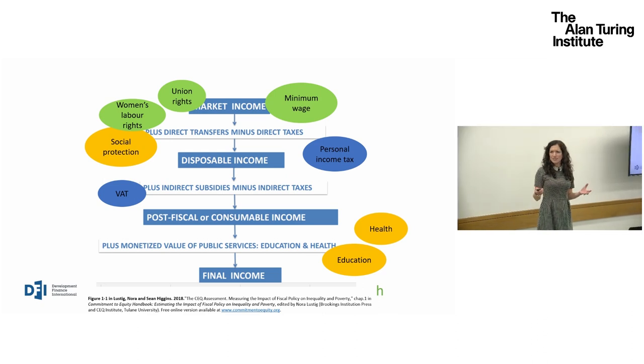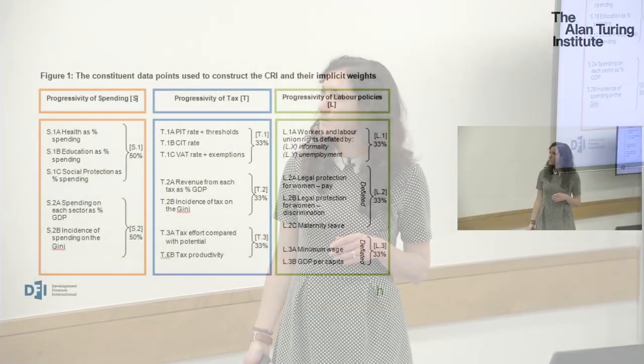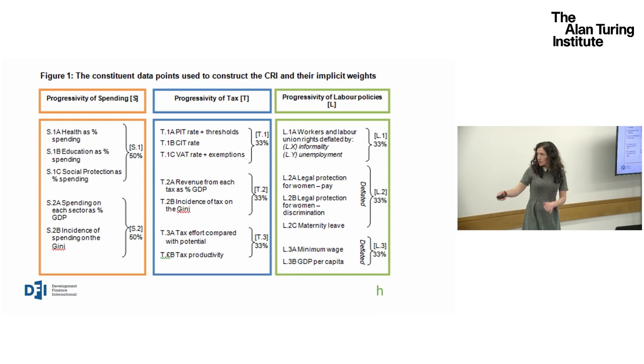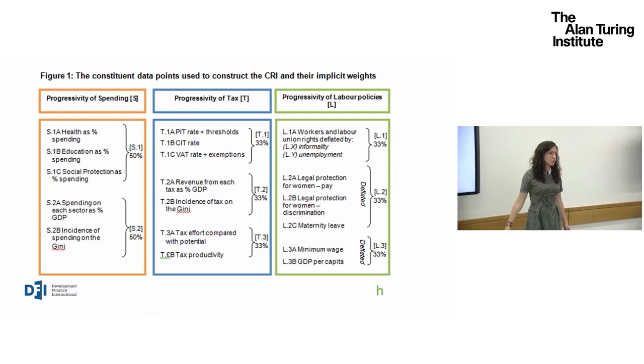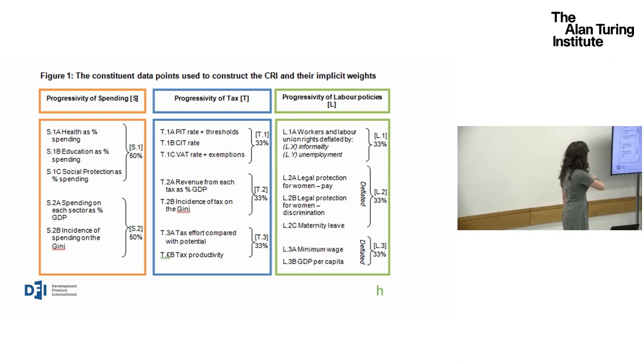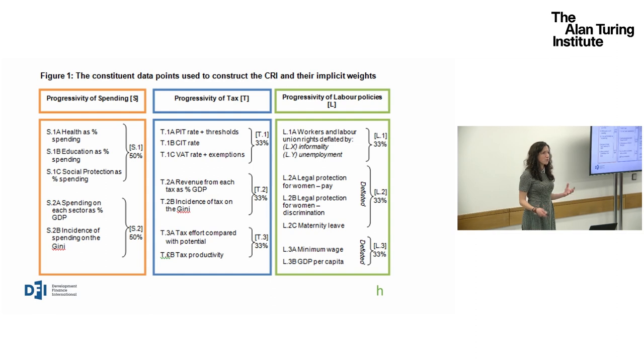These are general policy tools that a government will have at its disposal. There are many things a government can do, particularly around specific inequalities around gender, ethnicity, and spatial differences. What we wanted to do is come up with some general rules of thumb that we could compare between countries and use as an incentive to get governments to look at their policy mix and what they're doing to reduce inequality in comparison with their nearest neighbours and peers. Using those three general areas — spending, tax and labour markets — we've produced an index which includes indicators looking at all three policy areas.